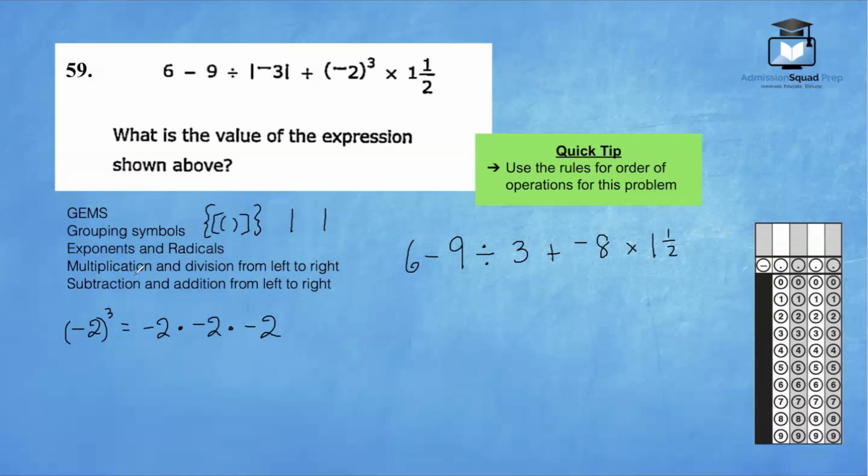And now we're going to apply any multiplication and division from left to right. So we're going to skip over this subtraction because that does not come first. We're going to work on the division right here. So negative 9 divided by 3 is negative 3. So we now have 6 minus 3. Then we're going to add, and we have this negative 8 times 1 and a half. So let's show our work over here to the left.